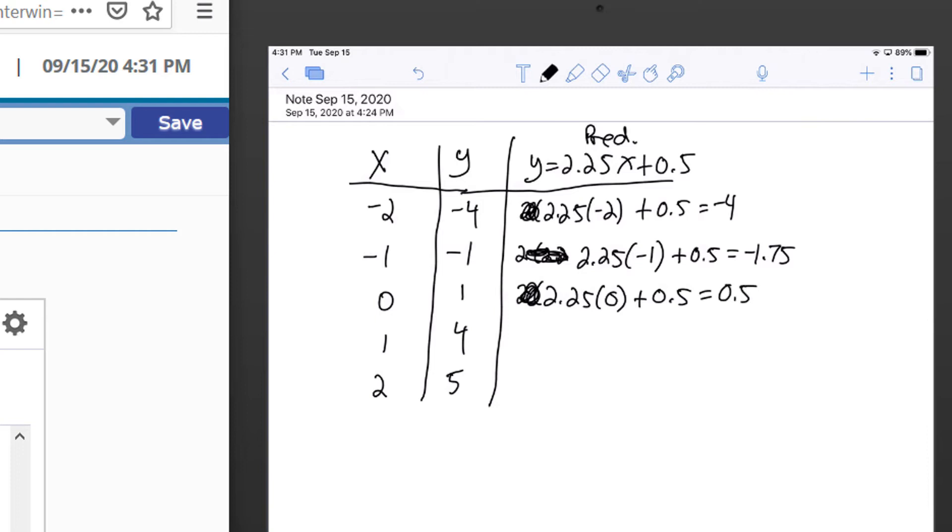That one's off by a little bit. If I plug in one, 2.25 times one plus 0.5, I get 2.75. That one's probably off by the most. And then finally, if I plug in two and use my calculator, that equals five. So that's right on the money. Those are the predicted values. Now I want to calculate the residual.